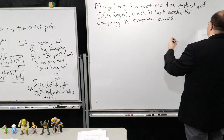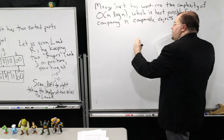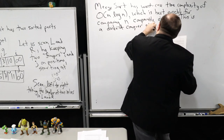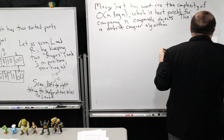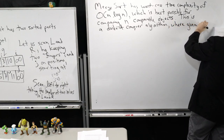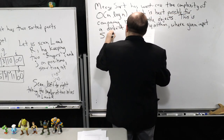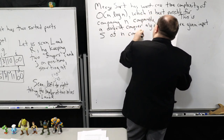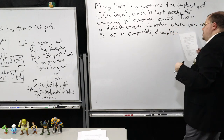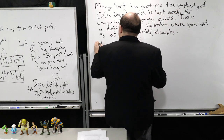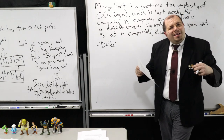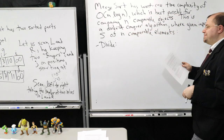So you might ask, what exactly does Merge Sort do? Remember, this is a divide and conquer algorithm. Given input S of N comparable elements, I must stress that S might be the entire array at some point. The divide part of this process is going to remind you a bit of Quicksort, but you're going to notice that I'm going to try to make Merge Sort emulate the best case scenario of Quicksort.